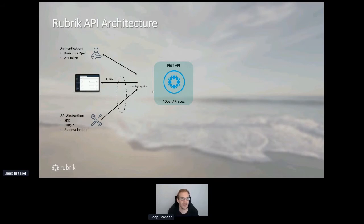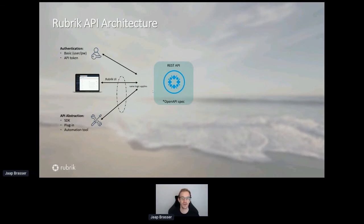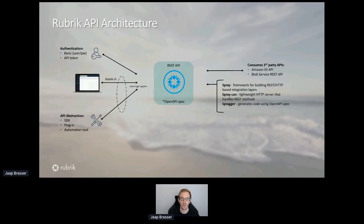I'm lucky enough to work for a company that's actually built from the ground up to be API first. So anything that is done in our UI is available as an API endpoint. We use this to build our SDKs, our plugins, and our automation tools on top of that — using the same logic. Our API also consumes third-party APIs. We're built using Spray and SprayCam, and we generate our OpenAPI specs as well.